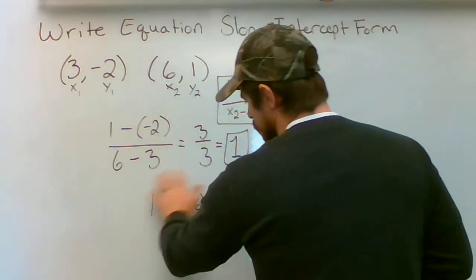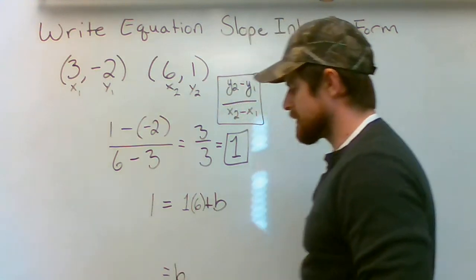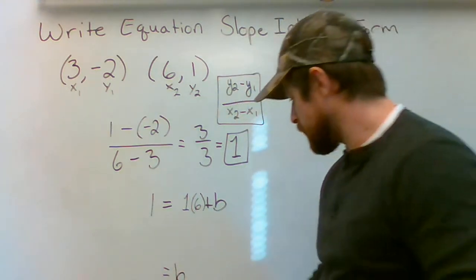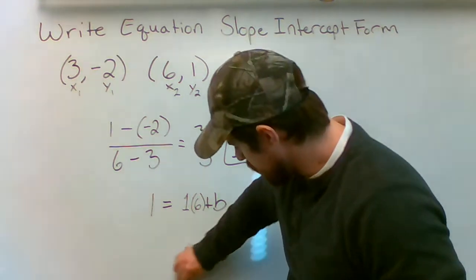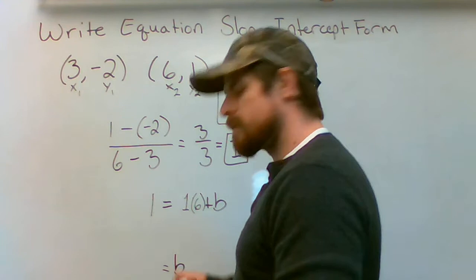And now I just need to solve for b. Or in other words isolate b so that it's the only value. Excuse me. So isolate b so it's the only thing on the right side. We're going to say b right there.